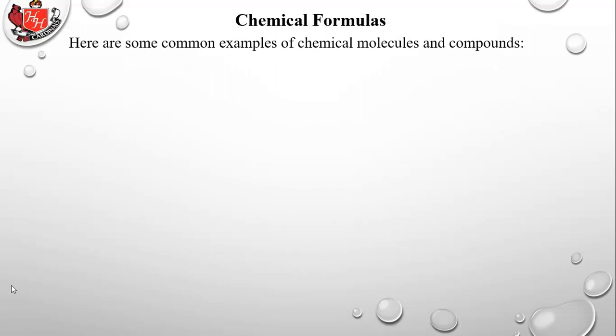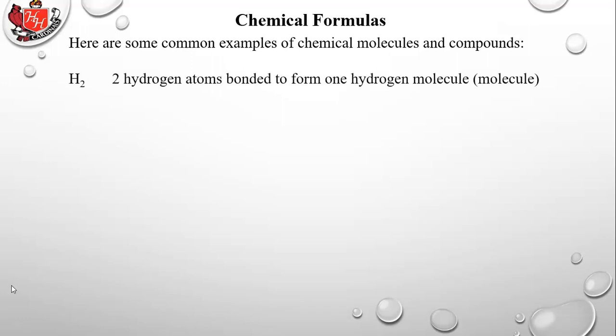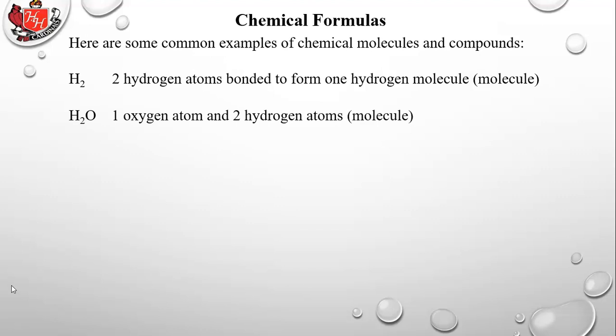Here are common examples of chemical molecules and compounds. H₂ is two hydrogen atoms bonded to form one hydrogen molecule — the subscript 2 means two atoms of hydrogen bonded together. Hydrogen never appears in nature as a single atom; it's always bonded with another hydrogen to form an H₂ molecule. It is a covalent bond — a non-metal bonding with another non-metal — so it is a molecule, an independent structure.